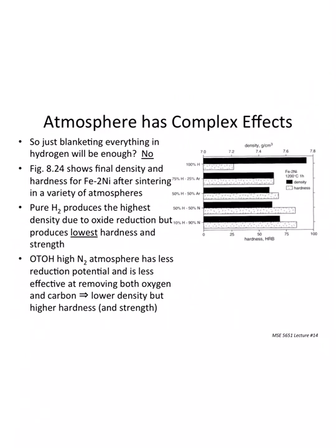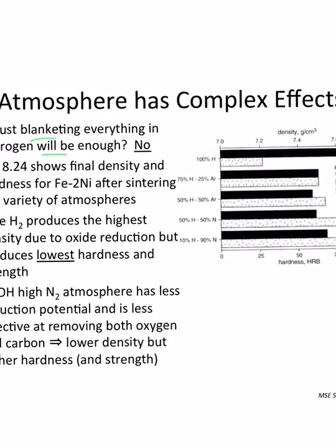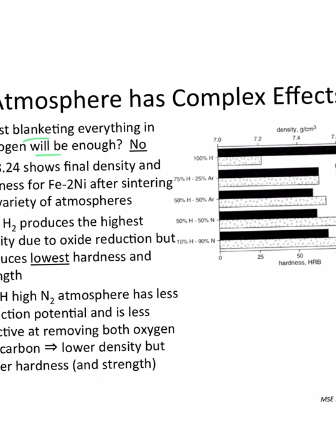You might think the answer is just to do everything in hydrogen — that will get rid of the oxide layers. Unfortunately, there's this thing called furnace chemistry that we now have to worry about. If we go to pure hydrogen, yes, that will remove the oxide layer very efficiently. However, it also removes other things — and those other things are carbon. So this is where it gets complicated.